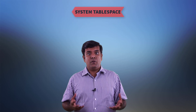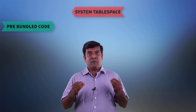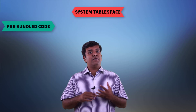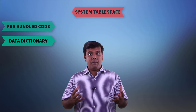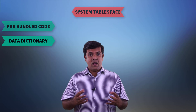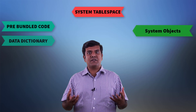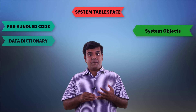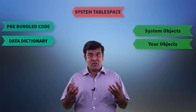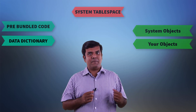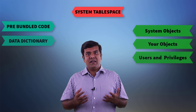System tablespace is generally the first tablespace that gets created when you create a database. It contains all the code that comes with an Oracle database, like built-in functions and built-in packages. It also has the data dictionary, which is a bunch of views based on some internal tables that have data about the database — for example, redo log groups, tablespaces, tables, indexes, procedures, functions, and their definitions. User creation and privilege grants — who can access what, who can do what — are also kept inside the dictionary.